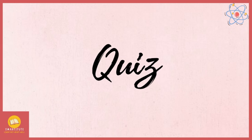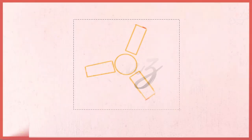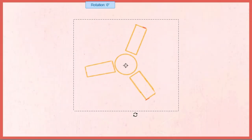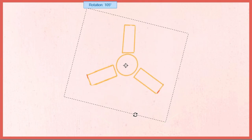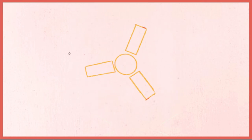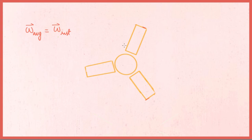Before ending, consider this question: what would you say about a fan if it rotates in a way that the average angular velocity equals the instantaneous angular velocity at every instant? Test yourself honestly. The answer is in the description box, but before checking, reply with your answer in the comment section.